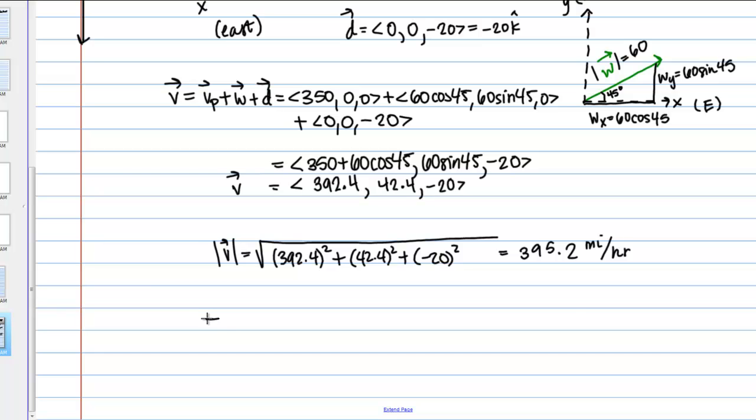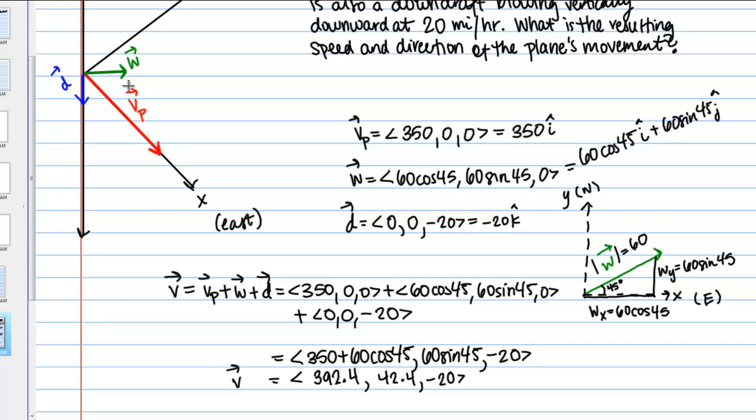So the resulting movement of the plane is a speed of 395.2 miles per hour. And let's think about the direction. So as far as how it's moving in the horizontal plane, it's just going to be slightly north of east, because if we think of this vector V, the plane is originally moving due east. And then this wind blows northeast. But the magnitude of this wind is so small in comparison to the magnitude of the plane's velocity, that it's not going to push it off course that much. So we'll say slightly north of east.